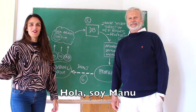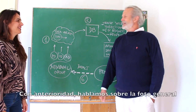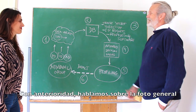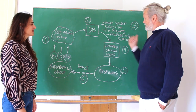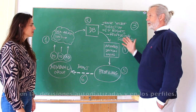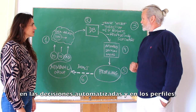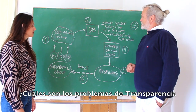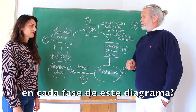Hi this is Manu. Hi this is Dean. So previously we talked about the big picture with transparency and automated decision-making and profiling. What are the transparency issues with each step?